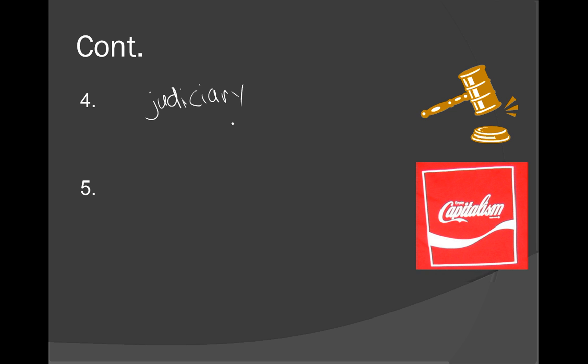Finally, the fifth characteristic — and the image should give it away — is capitalism, also known as a free market economy. The fifth characteristic of a democratic nation is capitalism. The people run the economy, which makes sense: if people are in charge of running the government, the economy will probably also be in the hands of the people. So our five characteristics of a democratic nation are: free elections, political parties, constitutional government, independent judiciary, and capitalism or free market economy.